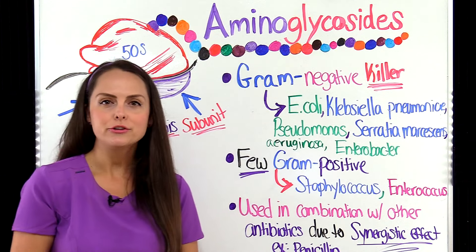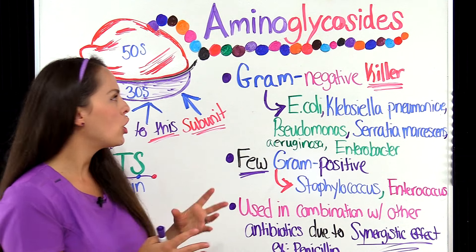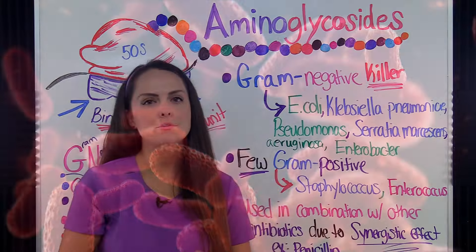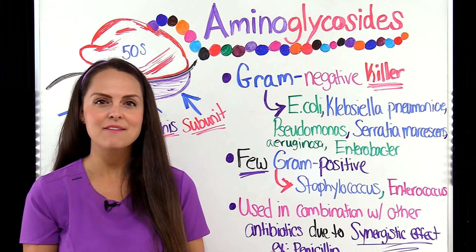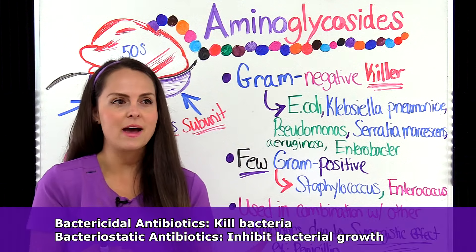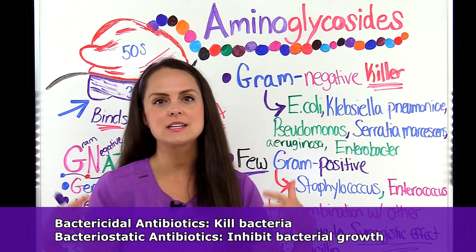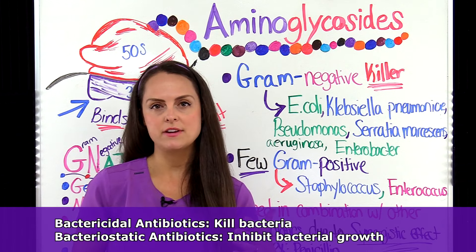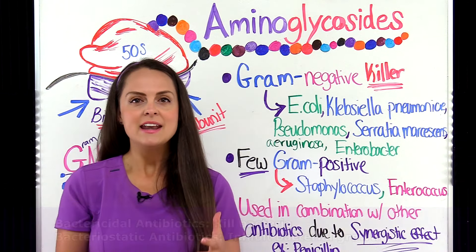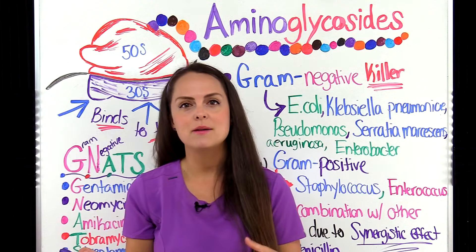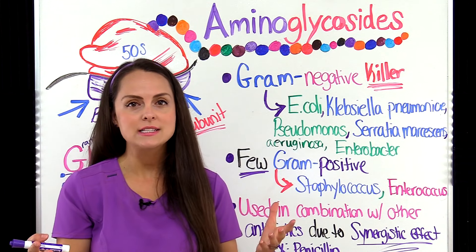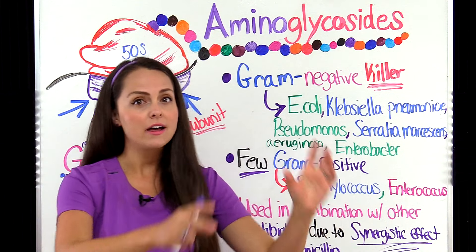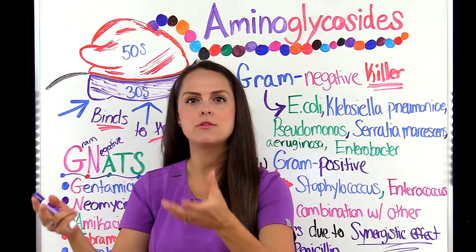Aminoglycosides are a particular group of antibiotics that target mainly gram-negative microorganisms. Therefore, they're really gram-negative killers because they have a bactericidal effect on the bacteria — they go in and kill it, rather than just inhibiting its growth, which would be known as having a bacteriostatic effect.